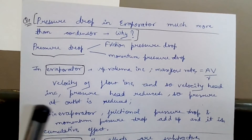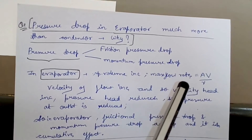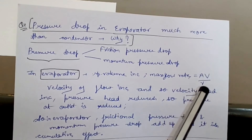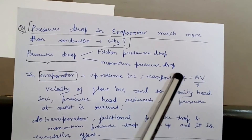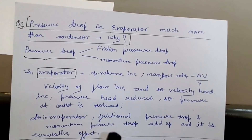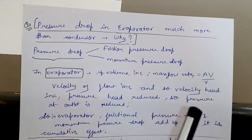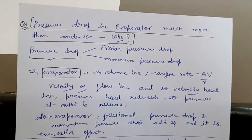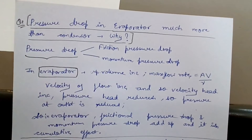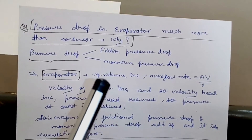In the evaporator, there is vapor refrigerant so specific volume ν is high. Mass flow rate is given by Av/ν, where A is area and v is velocity. If ν increases, velocity must increase to maintain the same mass flow rate. As velocity increases, velocity head increases, and by Bernoulli's equation the pressure head must decrease to keep total head constant — so pressure at the outlet is reduced. We can assume friction pressure drop is roughly the same in both evaporator and condenser; the deciding factor is the momentum pressure drop.